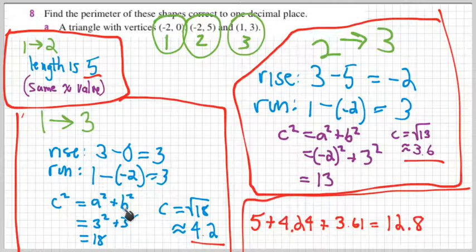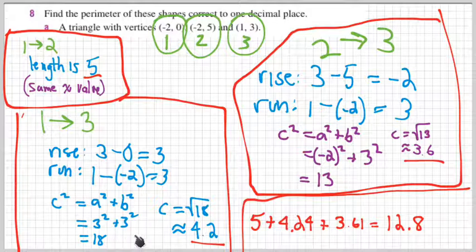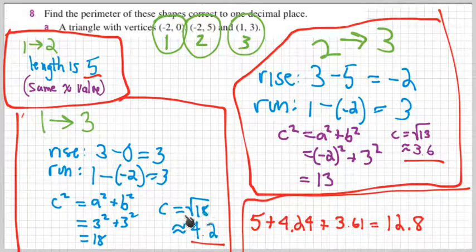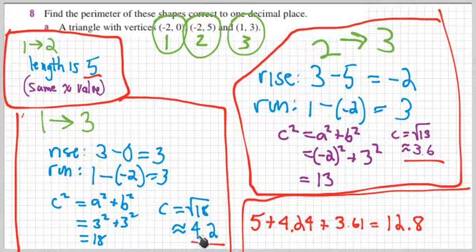So a squared plus b squared is what we're going to do here. We'll get 3 squared plus 3 squared. 3 squared is 9, and of course this 3 squared is 9, so 9 plus 9 is 18. And we take the square root to find that length of that segment, and it's about 4.2 units.